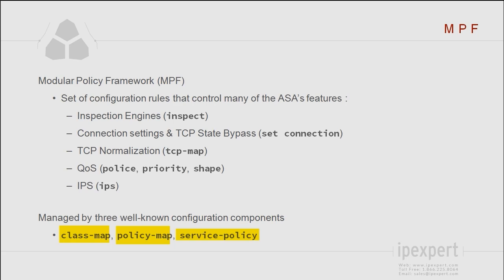Under the policy for those individual classes we have previously defined, we will be able to specify an action, which is going to be the actual feature controlled by the MPF, such as the inspection — selecting the inspection engine using the inspect command — maybe setting up some connection settings, changing TCP normalization options, enabling QoS, and specifying what packets we want to send to the IPS for deep packet inspection, and also what is going to be the mode of IPS deployment, so inline or promiscuous.